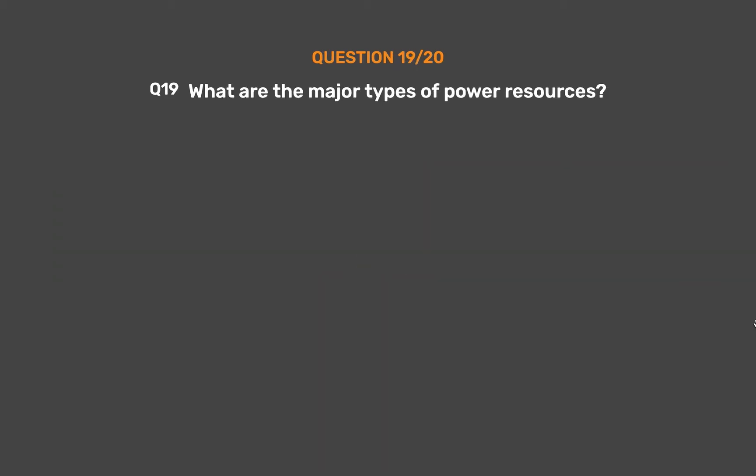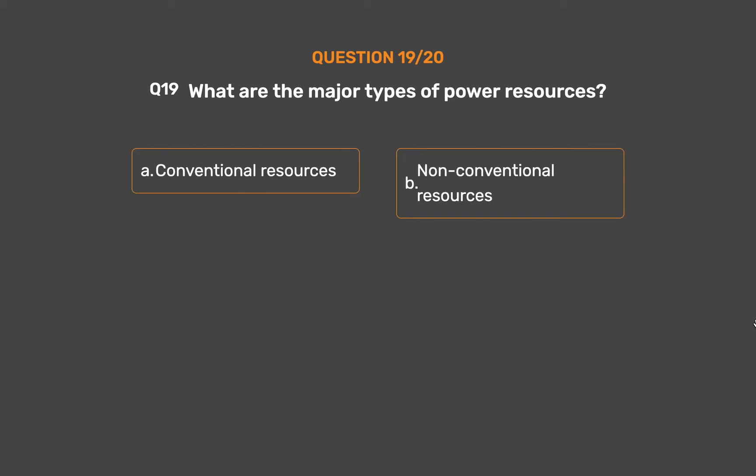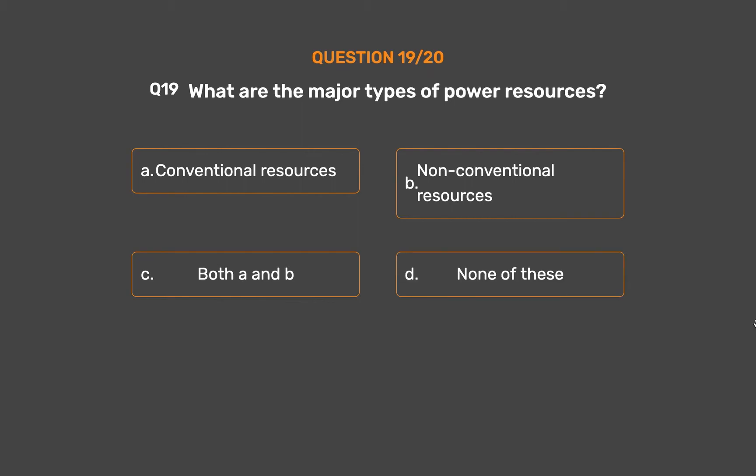Question 19: What are the major types of power resources? Option A: Conventional resources. Option B: Non-conventional resources. Option C: Both A and B. Option D: None of these.